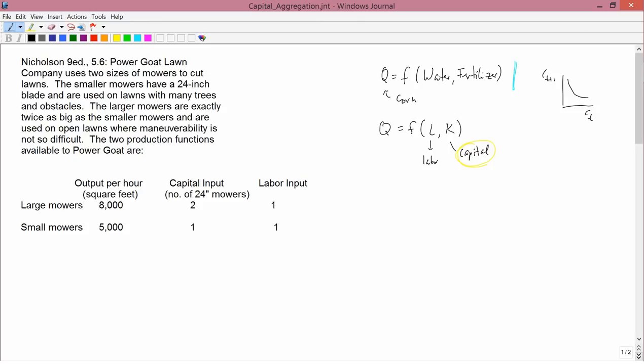Now there's another issue of the word capital, which is why I wrote on the left-hand part of the screen the excerpt from your textbook. So this is a problem, problem 5.6 from Nicholson's 9th edition. It says, The Power Goat Lawn Company uses two sizes of mowers to cut lawns.